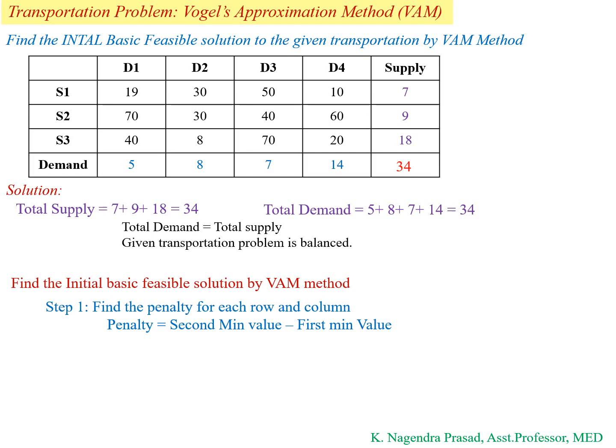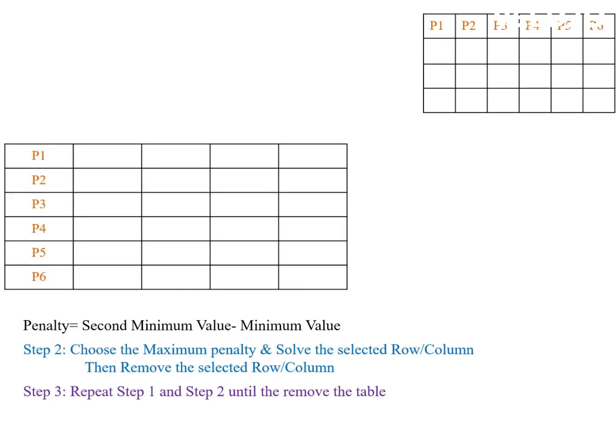Now let's start the BIM method to find the basic feasible solution. First step: find the penalty for each row and column. The penalty is determined by the second minimum value minus the minimum value for the respective row and column. Second step: choose the maximum penalty and solve the selected row or column, then remove it. Third step: repeat steps 1 and 2 until the entire table is removed.